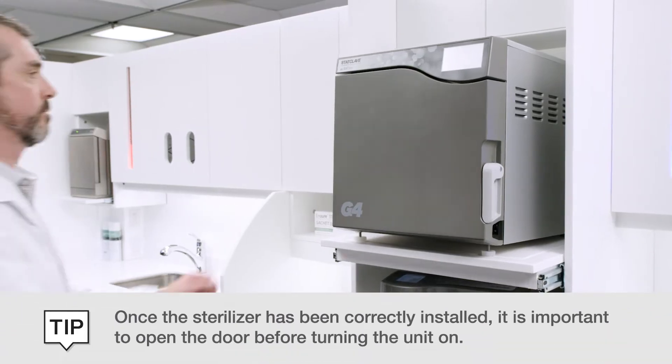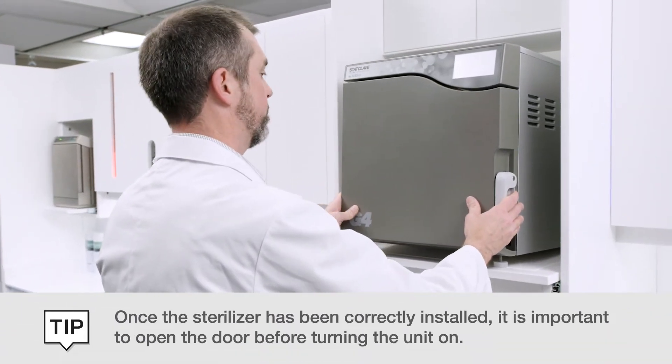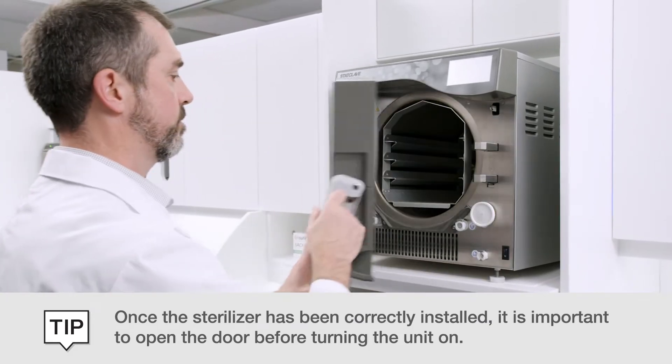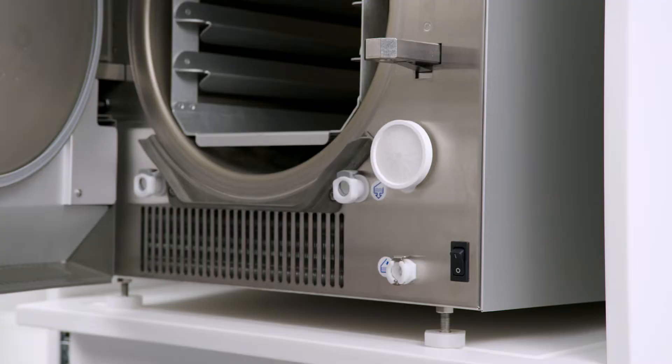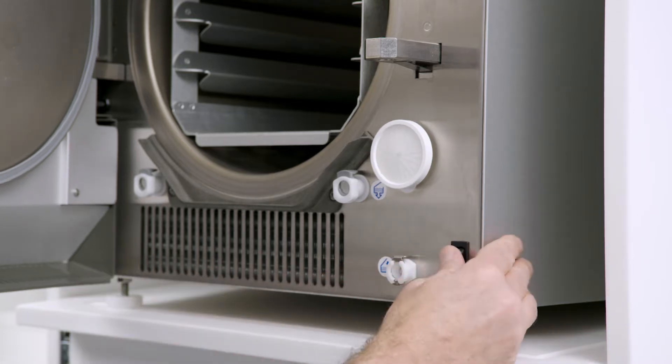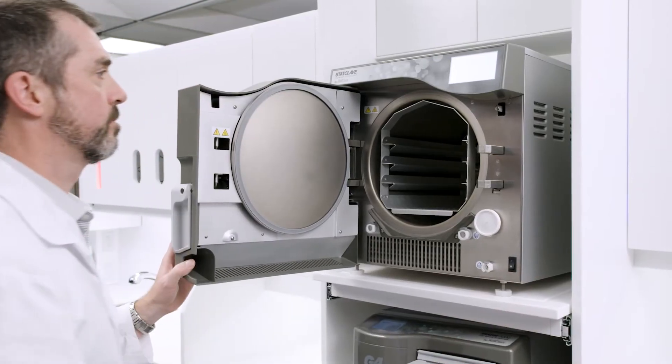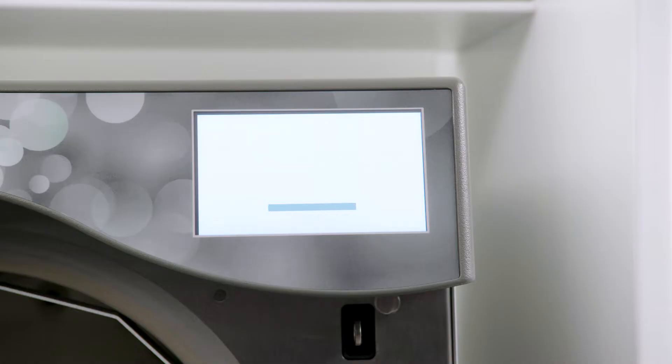Once the sterilizer has been correctly installed, it is important to open the door before turning the unit on. With the door open, the sterilizer will automatically measure the atmospheric pressure of the installation location. Turn the StatClave on using the main switch located on the right side of the unit.